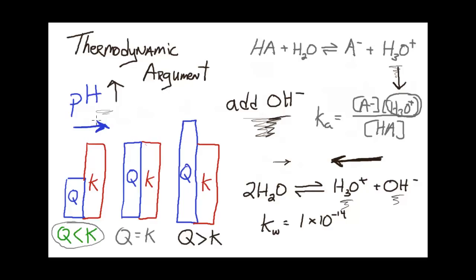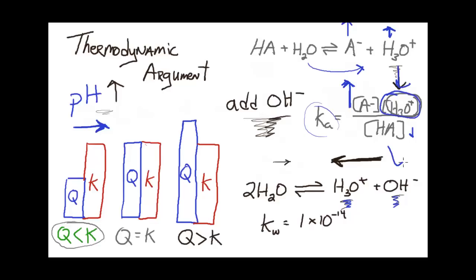Proceeding towards products means the concentration of A⁻ increases, and we will recover some of the H₃O⁺ removed. However, the important point is that we will not get back to the original H₃O⁺ concentration. We take away H₃O⁺ quantitatively by adding OH⁻ and produce some more as the system reaches equilibrium, but the A⁻ value compensates for the loss of H₃O⁺. When K is re-established, A⁻ is definitely higher, HA has gone down, and H₃O⁺ initially goes down and then returns up a little bit, but overall this value is lower than its original value. Therefore, the pH goes up because the H₃O⁺ concentration goes down.